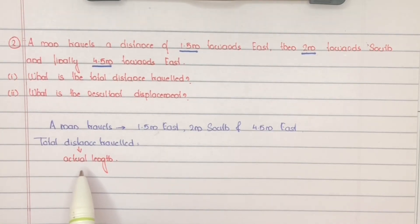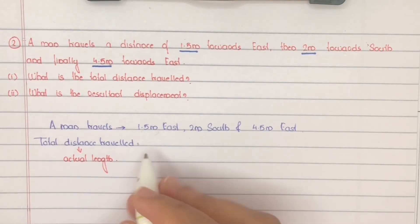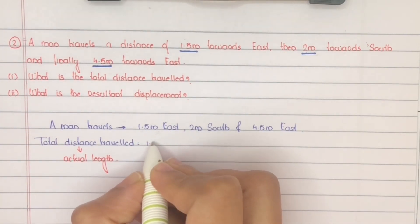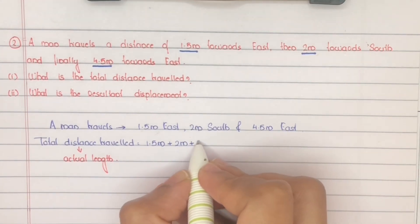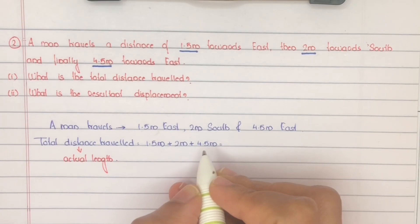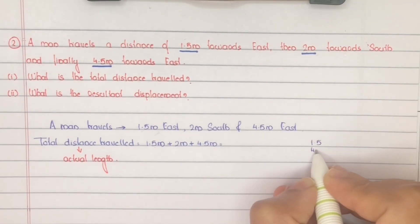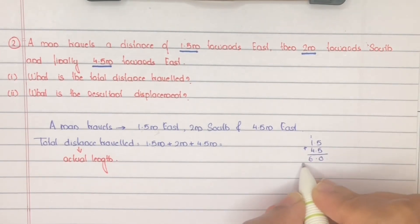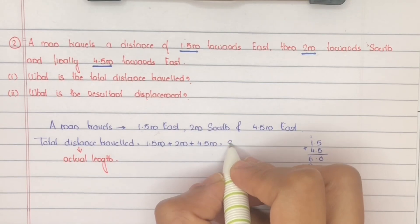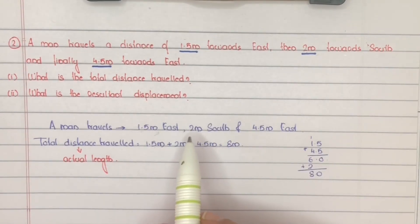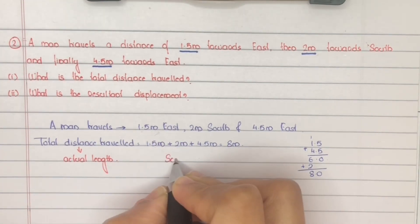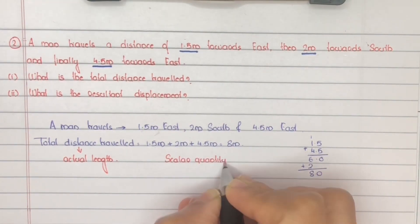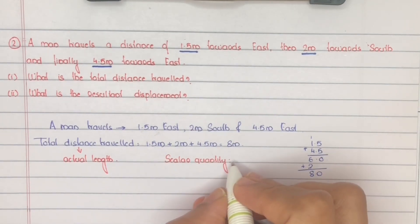Total distance means actual length covered by the body — that means total length. So total length is 1.5 meter plus 2 meter plus 4.5 meter, which equals 8 meter. Direction — east, south, etc. — does not matter here. Distance does not depend on direction; it only depends on magnitude. Distance is a scalar quantity — it depends only on magnitude.